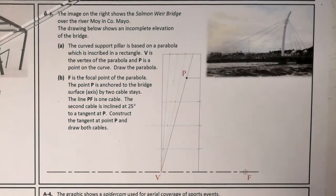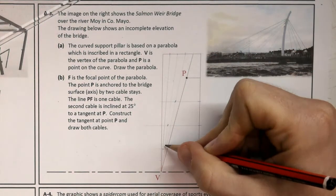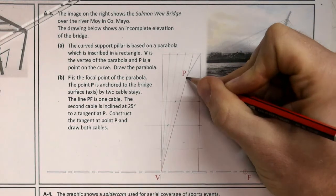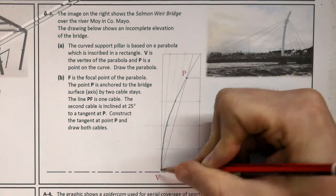That's a nice and quick construction for drawing my parabola through point P up here to my vertex.